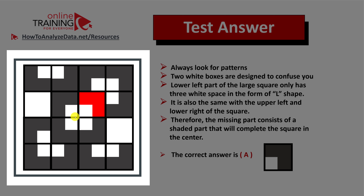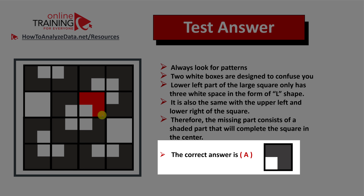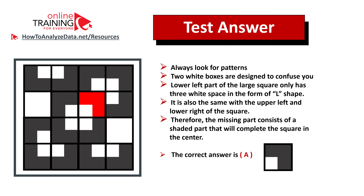A couple of important considerations when answering this question: the two white boxes are designed to confuse you. The lower left part of the larger square only has three white spaces in the form of an L-shape, and a similar symmetrical pattern follows in the upper right corner. This is why the missing part consists of the shaded part which completes the square in the center. So the correct answer here is choice A. Hopefully you've nailed this question and now know how to answer similar problems on the test.